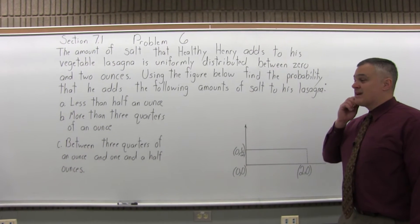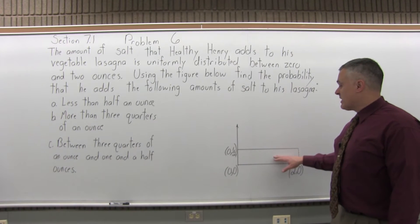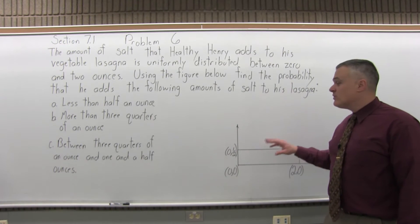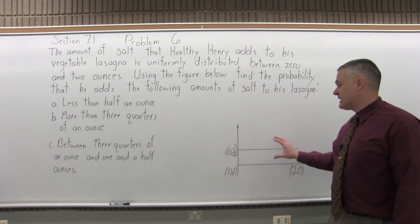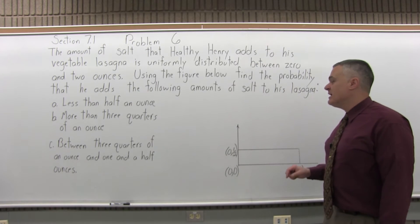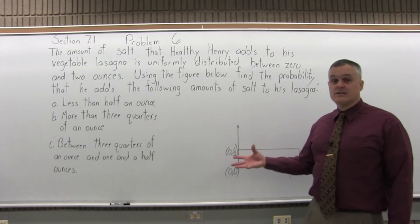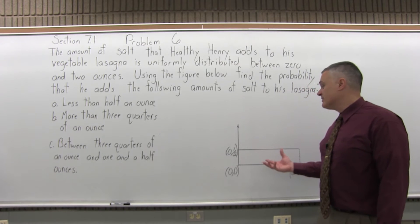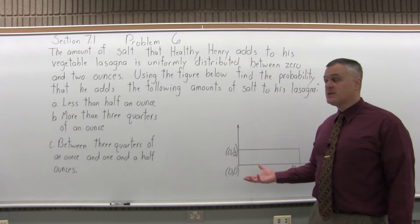So we have less than half an ounce. So the graph is this rectangle here. Any uniformly distributed probability has a rectangle type graph. And the area on your graph is the probability. So when it's a rectangle, the area is base times height.